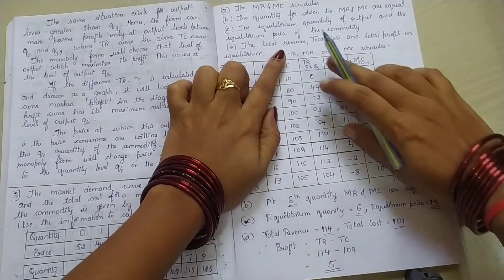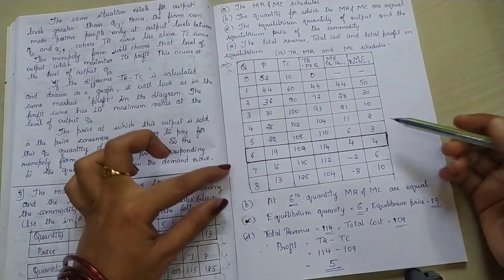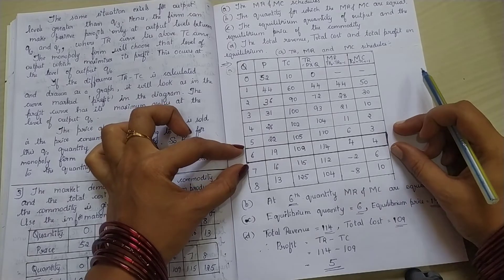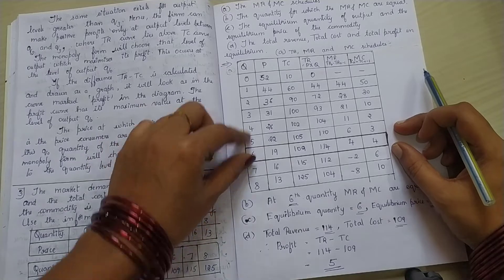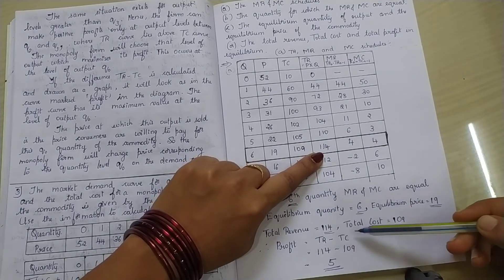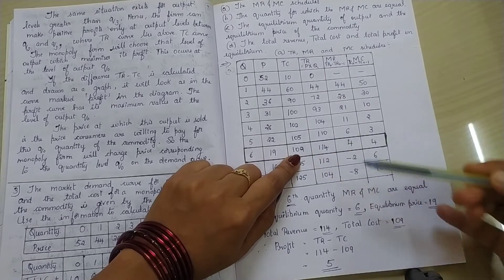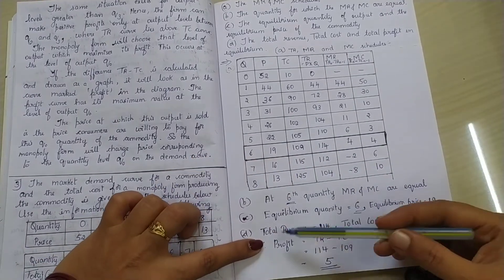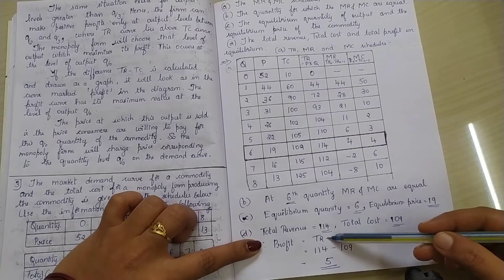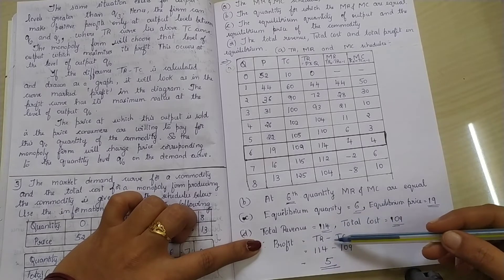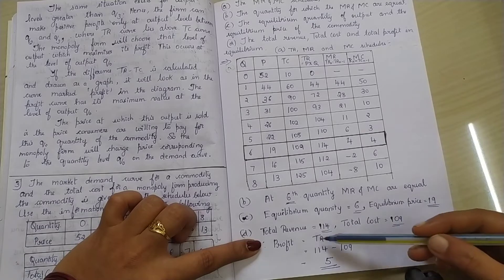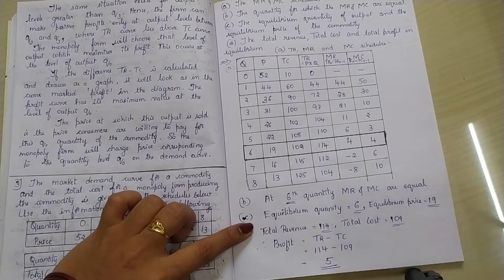Next question is the total revenue, total cost and total profit in the equilibrium. Equilibrium means the same row, okay? Where MR and MC values are equal. Now, what is the total revenue there, total cost there, and total profit there? Total revenue we directly calculated. See, the TR column. Total revenue is 114. Total cost - see, the TC column, total cost column. What is the value? 109. Profit we need to calculate. Therefore profit is equal to - we know the formula of profit, right? What is the formula of profit? Total revenue minus total cost is equal to profit. So, total revenue is 114, total cost is 109. 114 minus 109, therefore, the profit is rupees 5.